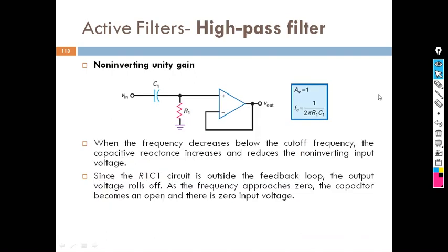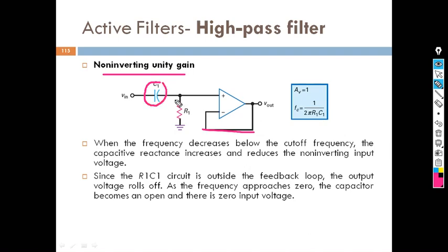Now we will move to the second section: the high pass filter. In the high pass filter, this is the non-inverting with unity gain. How does it work? Here the capacitor is connected in series and the resistor is connected in parallel. You know, the capacitor will block DC components — that means low frequency components. Only high frequency components will be allowed. So it is a high pass filter. The cutoff frequency is designed by the same formula and gain is 1.